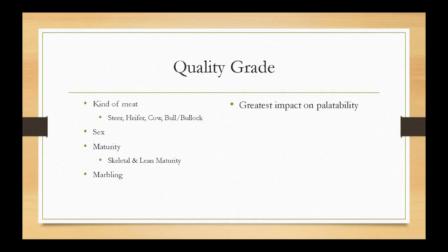Now let's move on to quality grade. The factors that impact quality grading are the kind of meat, sex, maturity, and marbling — and this has the greatest impact on palatability for beef. It's a very good predictor of what the carcass is going to taste like. This system was developed quite a long time ago, and until recently, nothing else predicted quality as well as the U.S. grading system.